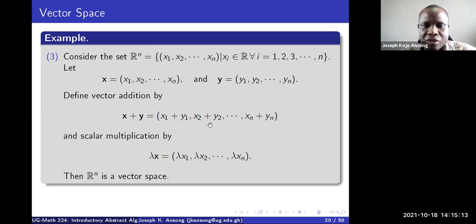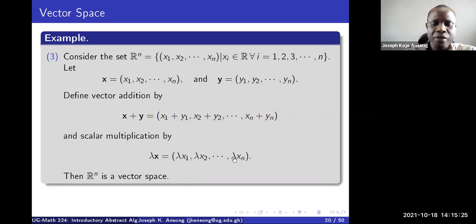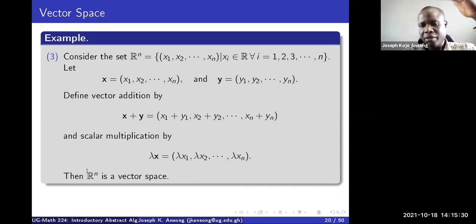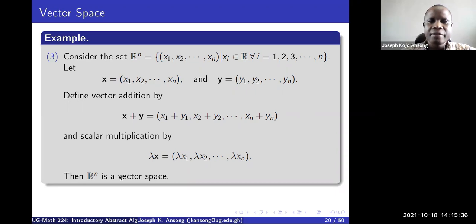Scalar multiplication in ℝⁿ is defined by taking each component and multiplying by the scalar lambda, giving (λx_1, λx_2, ..., λx_n). With this definition of addition and scalar multiplication, you can prove using all the axioms that ℝⁿ is a vector space.